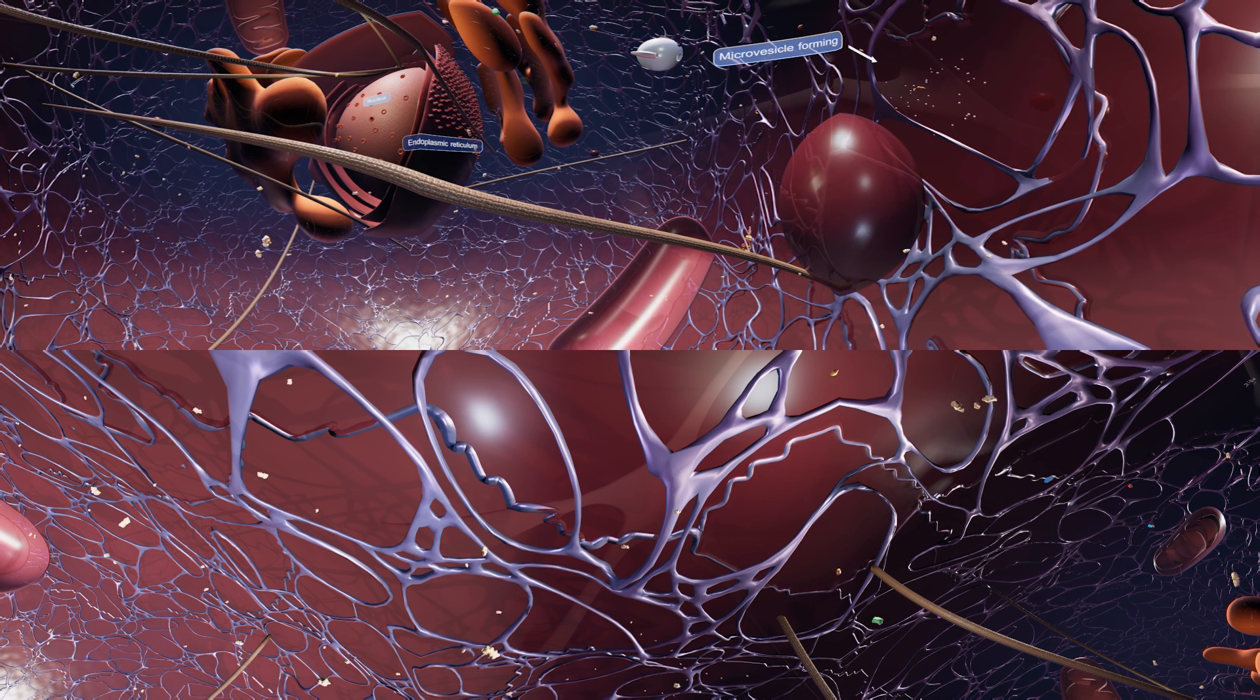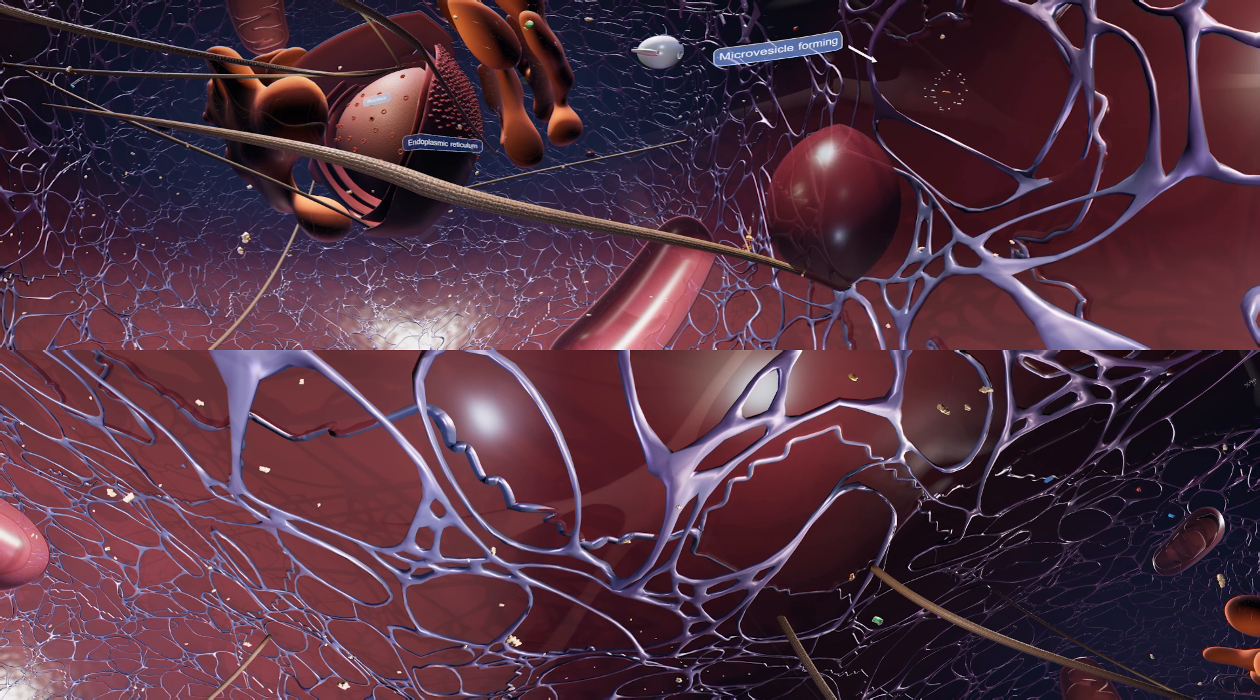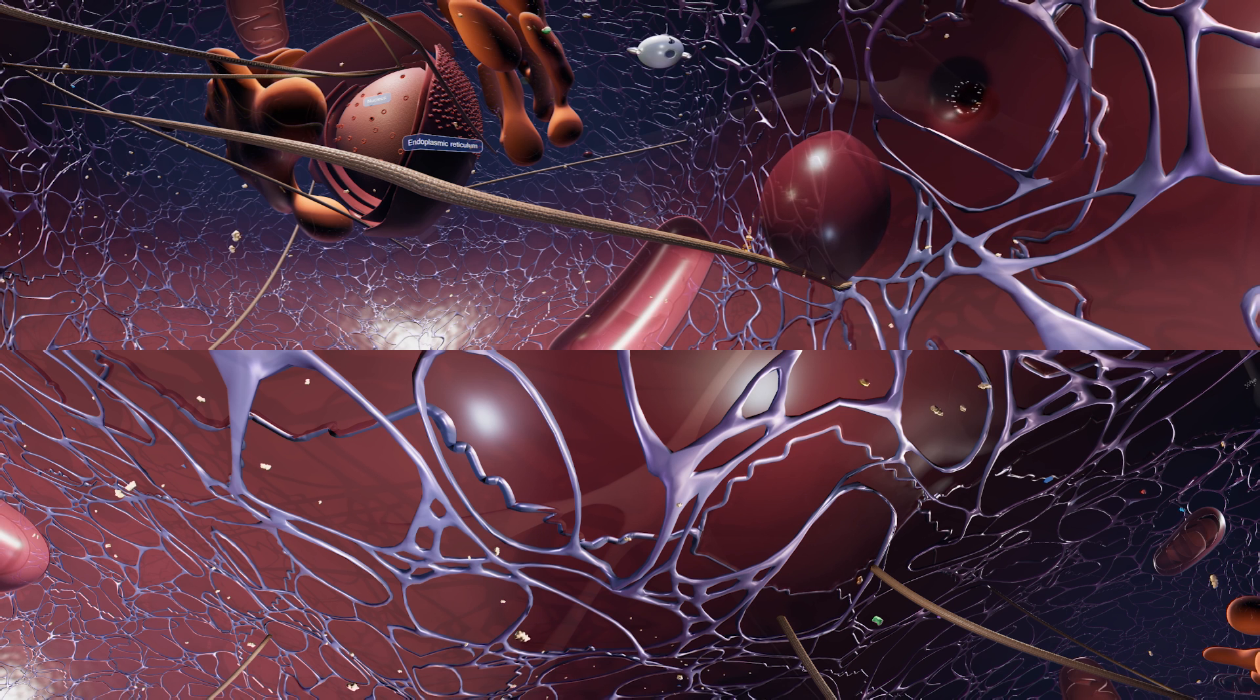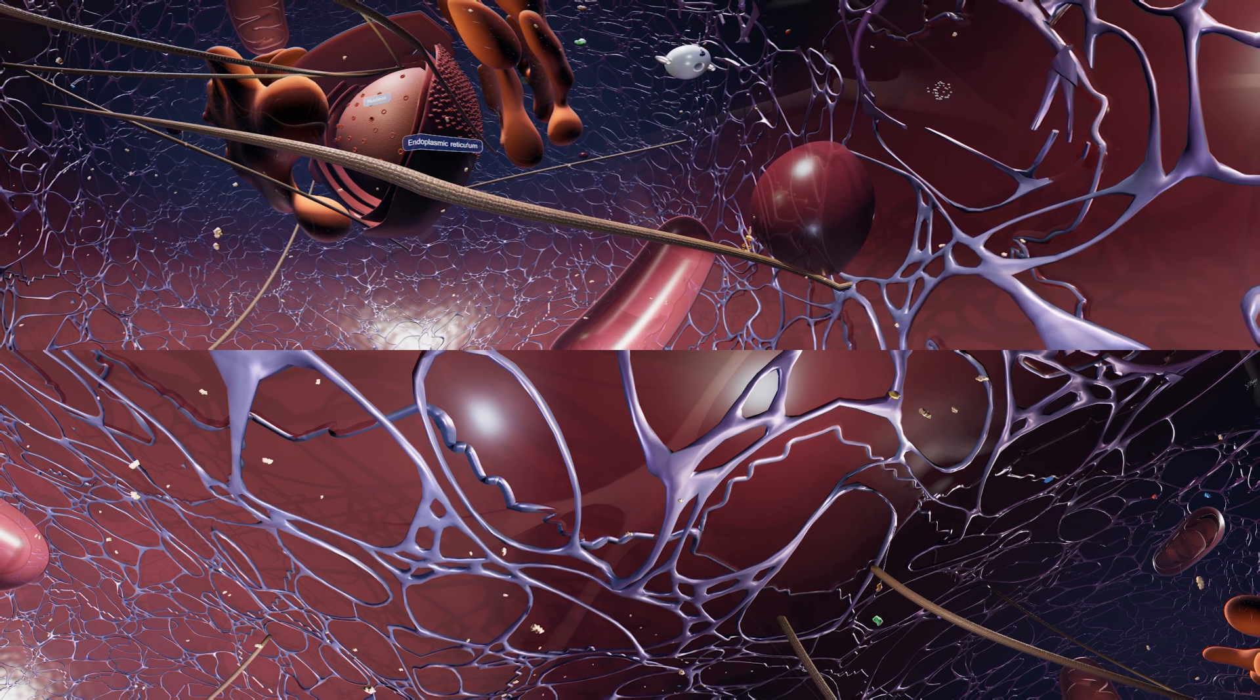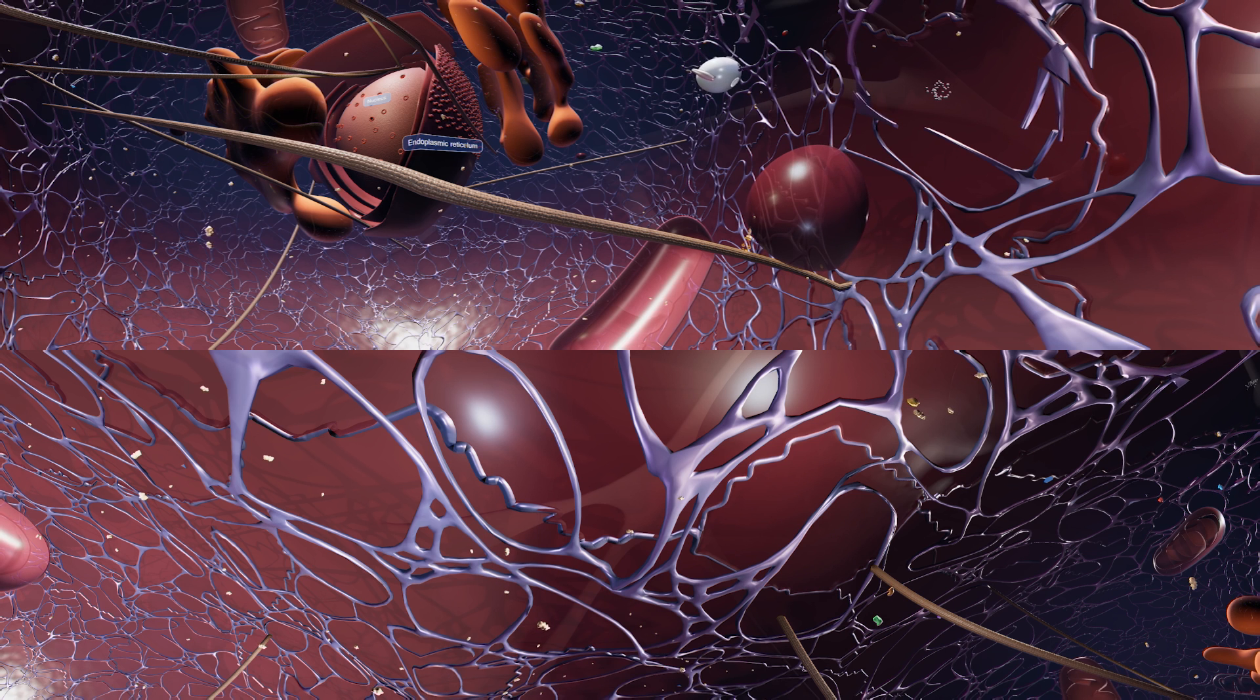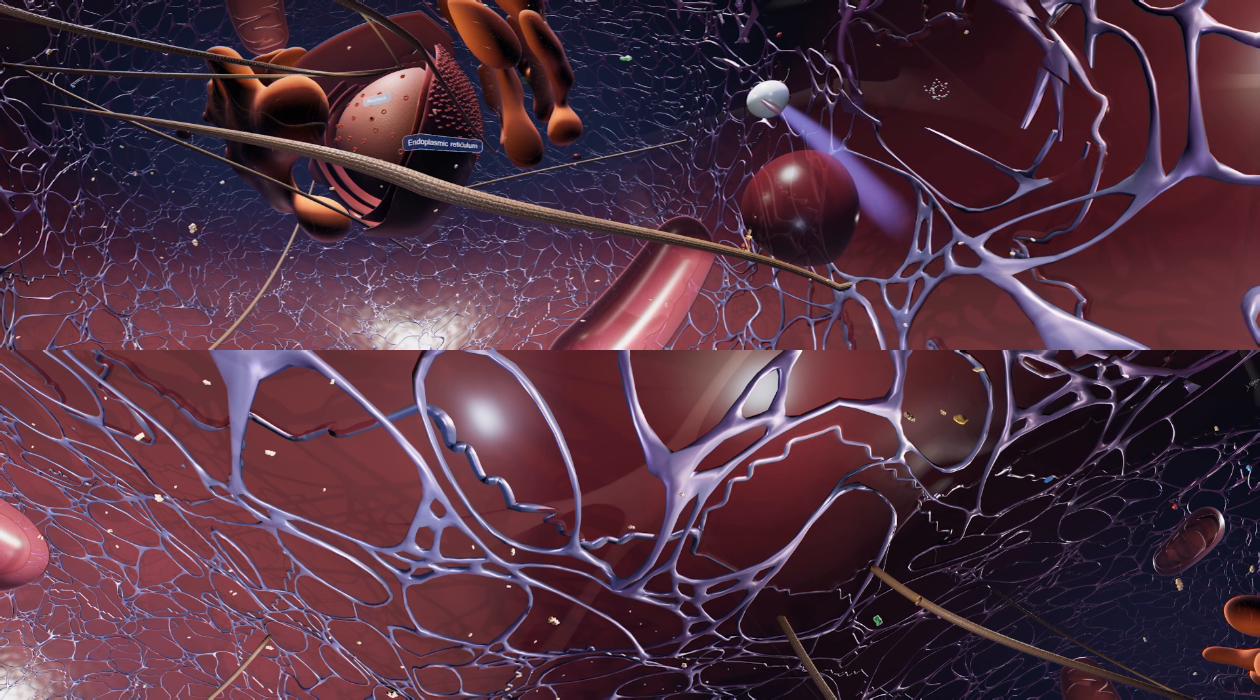Look to your right. Microvesicles are a type of EV formed when the cell surface bends outwardly until it pinches off, with its cargo loaded into the microvesicle as it forms. Other types of EV that form from the cell surface are also made, such as apoptotic bodies that form when cells are dying.